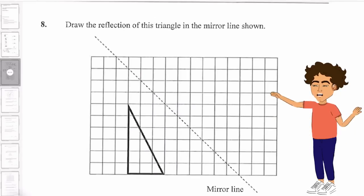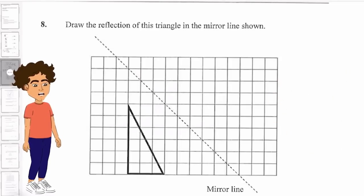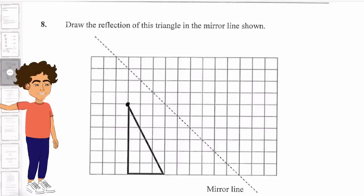So draw the reflection of this triangle in the mirror line shown. What we need to do here now is find out the distance that this shape is from the mirror line, and then replicate that on the other side. The first thing I would do is find out the distance from one of the points.